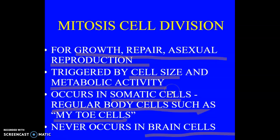Number one: give three purposes of mitosis — growth, repair, and asexual reproduction. What triggers the cell to divide? Mostly cell size, because remember small cells are better. If a cell gets too big it doesn't become as efficient, so then it will divide. And it occurs only in our somatic cells — that's your regular body cells. Think about it: mitosis, somatic cells — just your regular body cells are the ones that go through mitosis.